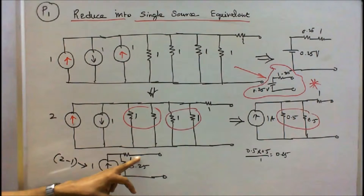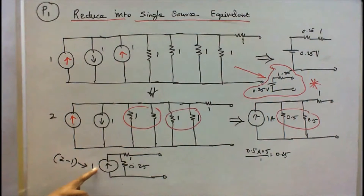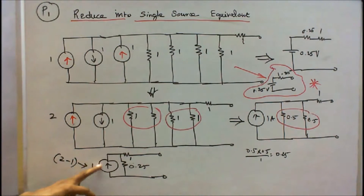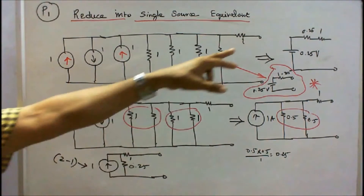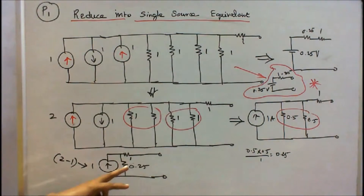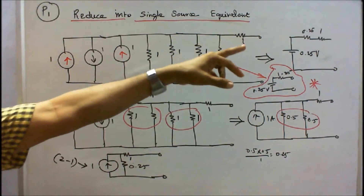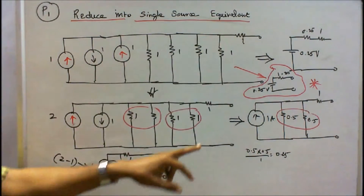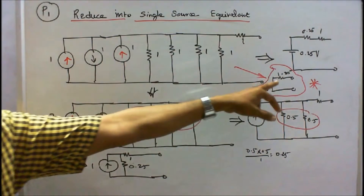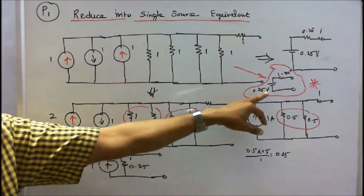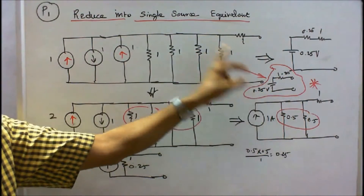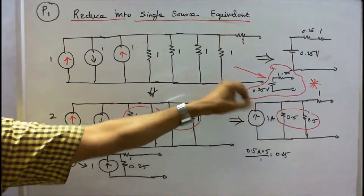This is 0.25 ohms, this is 1 ohm, this is 1 amp. Now I convert this current source into a voltage source: 1 into 0.25, that is equal to 0.25 volts, and the 0.25 ohms should be connected in series. So 1 plus 0.25 is 1.25 ohms, and the voltage is 0.25 volts. This is the equivalent single source.